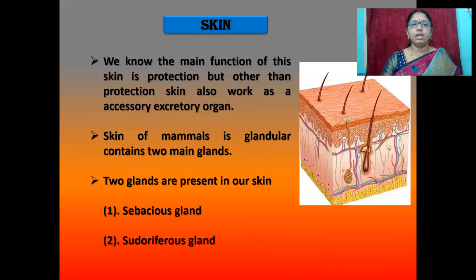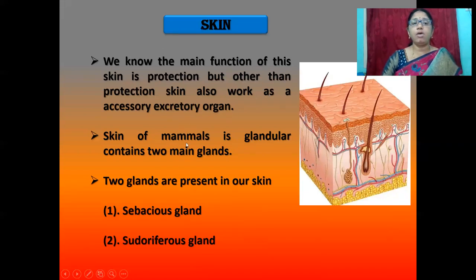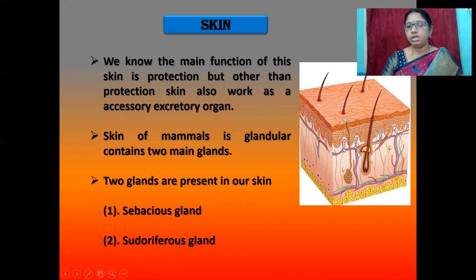The first accessory excretory organ is the skin. The main function of skin is protection, but skin also works as an accessory excretory organ. The skin of mammals is glandular and contains two main glands: the sebaceous gland and the sudoriferous gland.